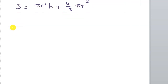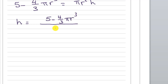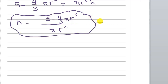From the volume equation, rearranging: 5 minus (4/3)πr³ equals πr²h, so h equals (5 minus (4/3)πr³) divided by πr². This is a very important equation.